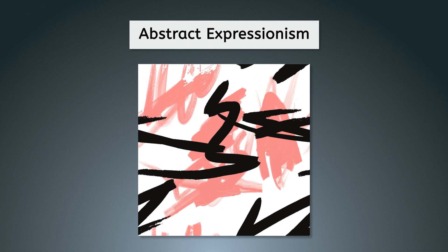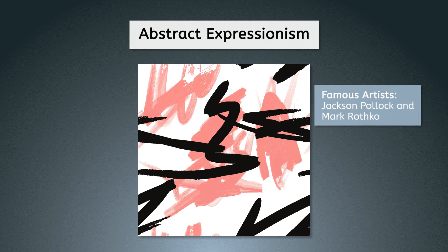Abstract Expressionism. In the mid-20th century, artists like Jackson Pollock and Mark Rothko pushed the boundaries of traditional painting techniques with their use of abstraction and gestural mark-making. Organic shapes were often used in Abstract Expressionist art to give a sense of movement and energy. Pollock's famous drip paintings, for example, featured swirling organic forms that seemed to dance across the canvas.